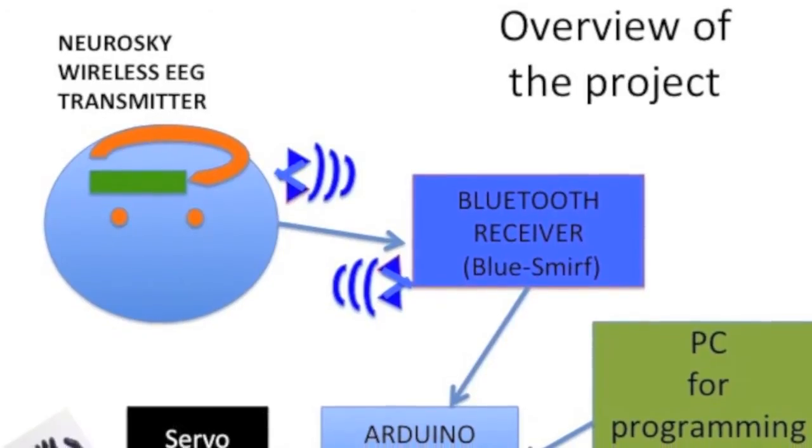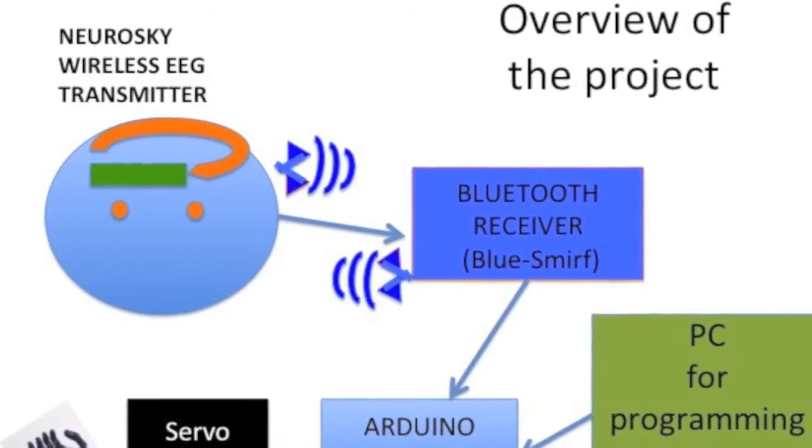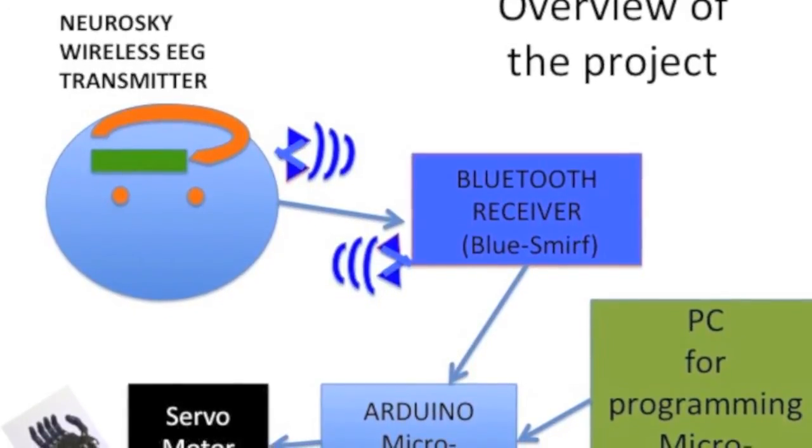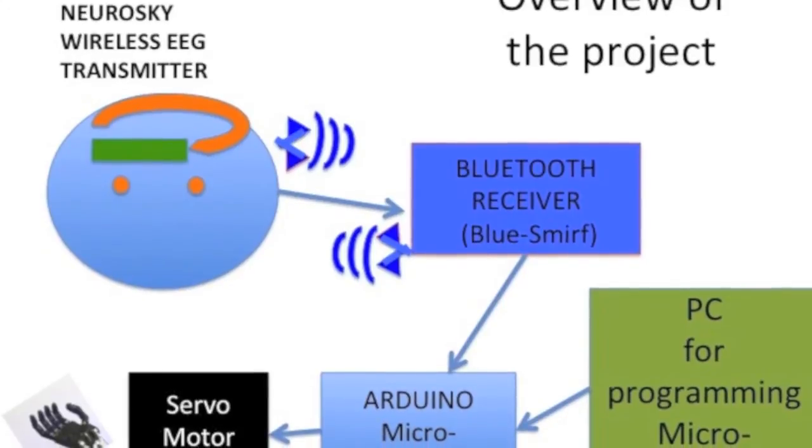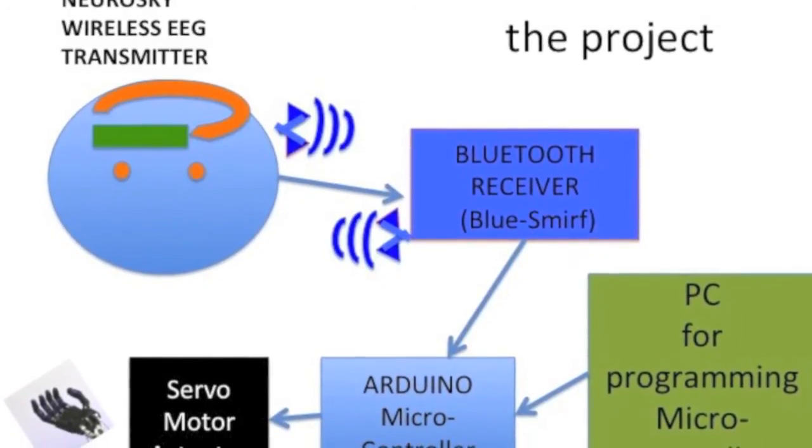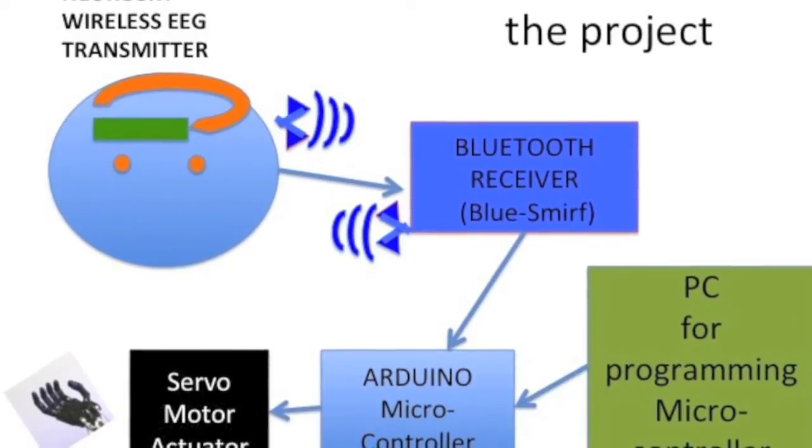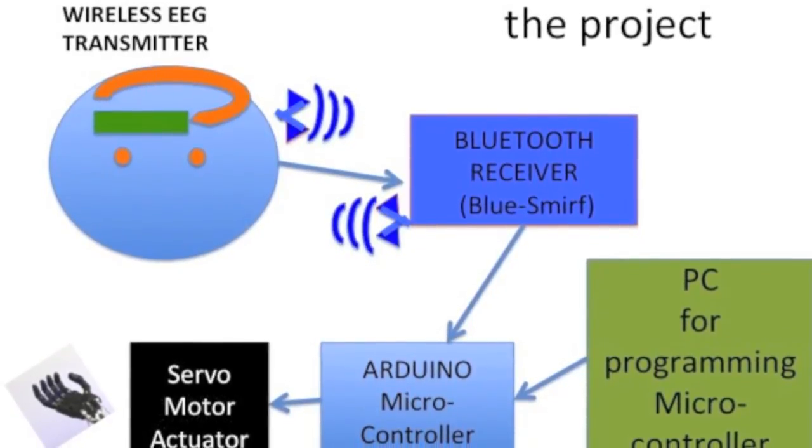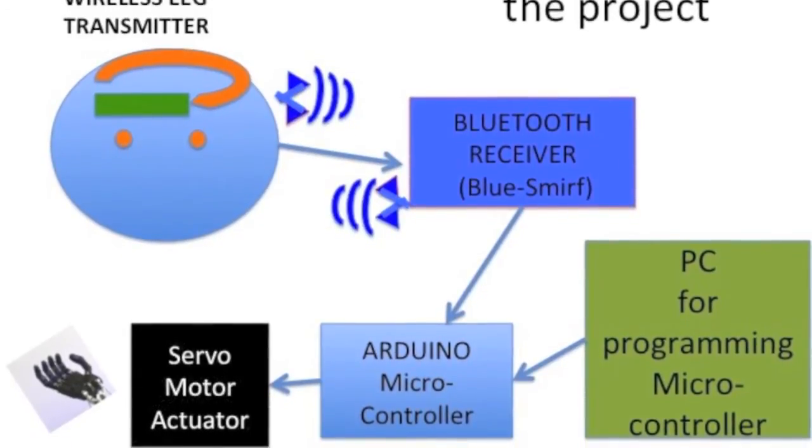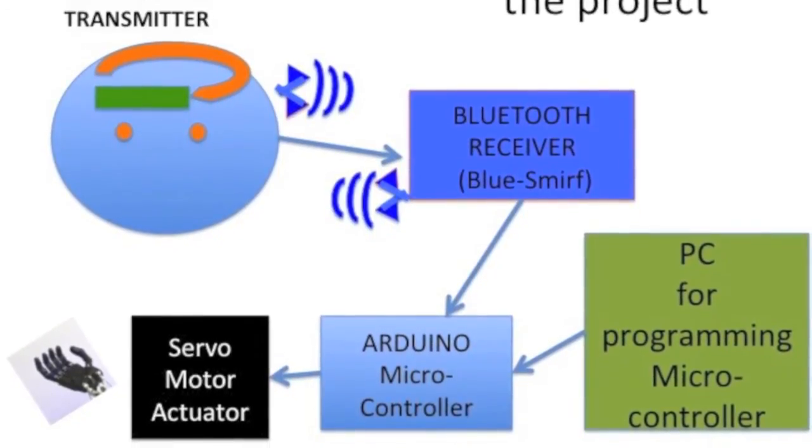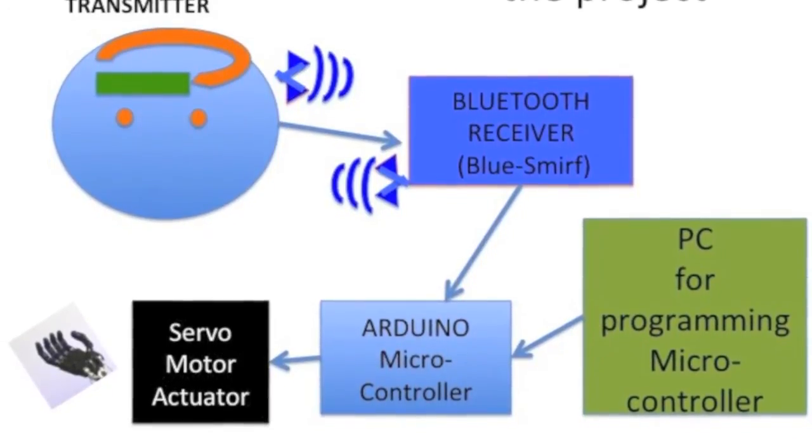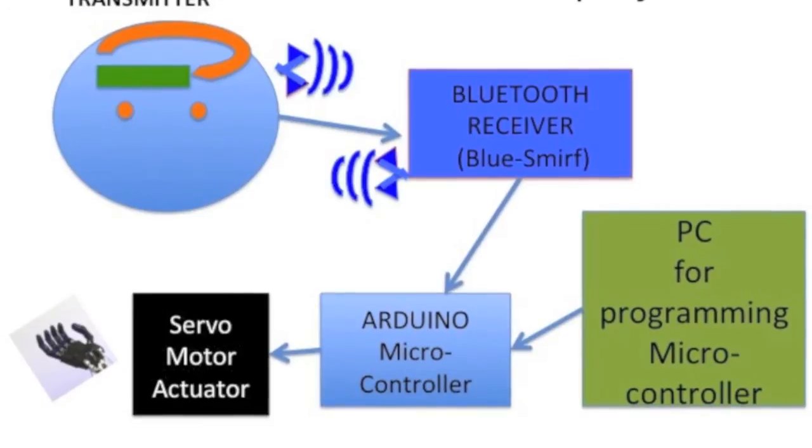The NeuroSky headset reads the brain waves of the user. It then sends those brain waves as information to the Bluetooth receiver, our BlueSmirf. The BlueSmirf module then forwards the brain wave information to the Arduino microcontroller. Meanwhile, a computer has uploaded a program to the Arduino microcontroller. That program will tell the Arduino what to do with the brain wave information. In our case, the program tells the Arduino to read the attention brain waves from the user and use that measure to determine when it should spin the servo motor.